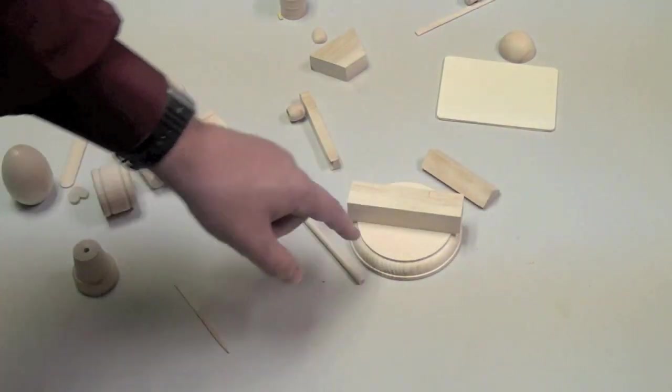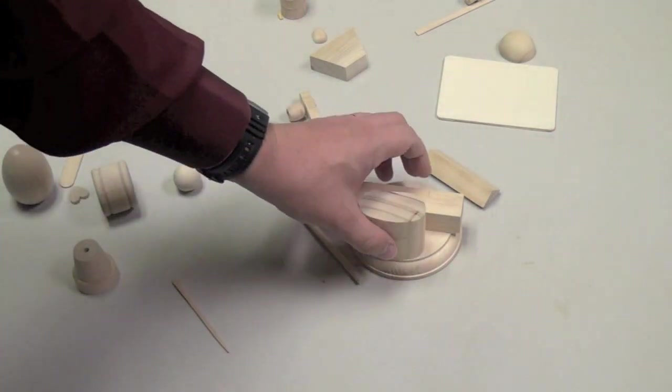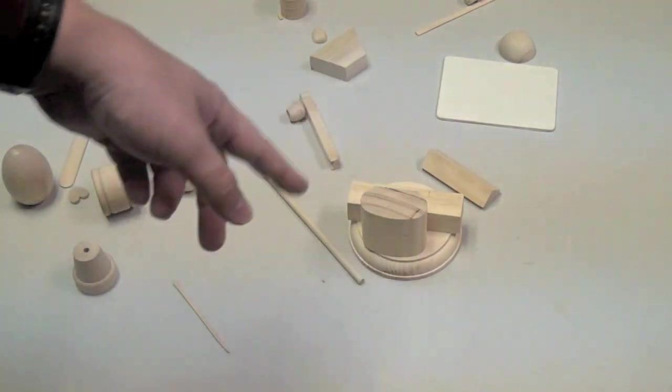So when I put this piece on, I've scored one point because it's touching one thing. If I put this piece here, I've scored two points because I've touched two things.